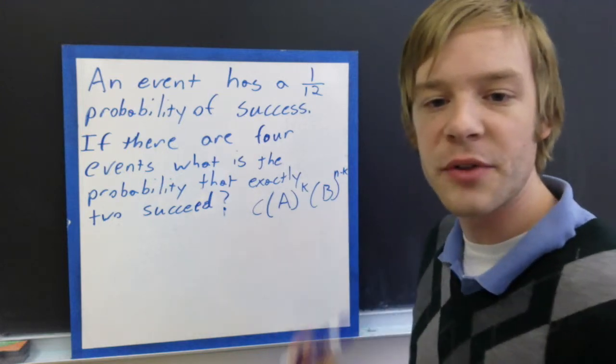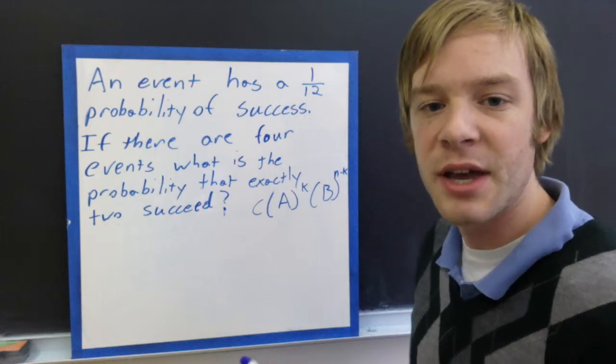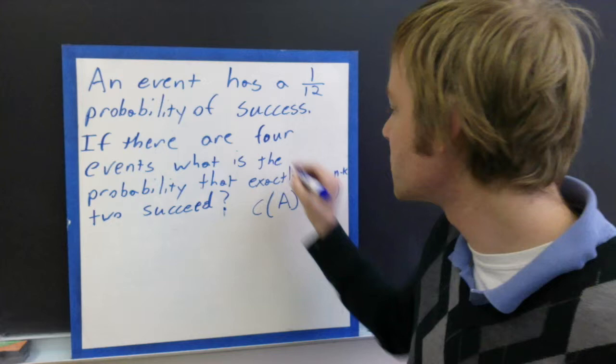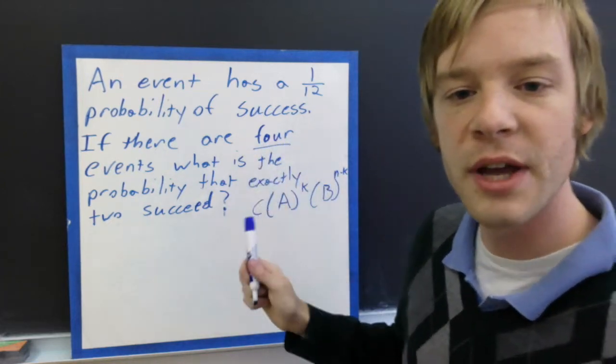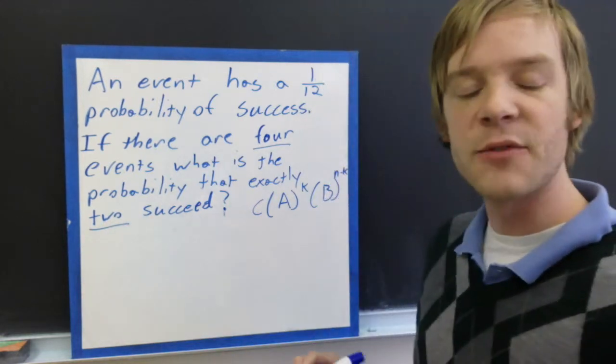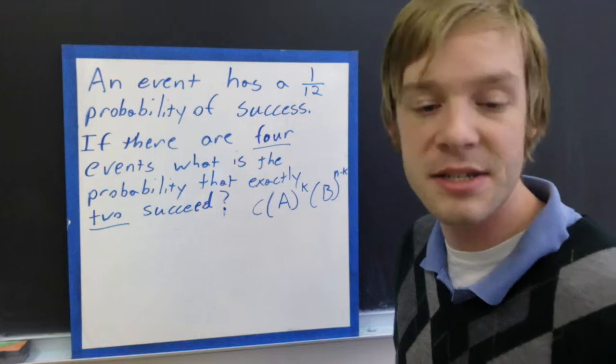So, we just need to fill these in. First off, c was our number of combinations. And if we have 4 choose 2, because we have 4 total and we are choosing 2. If you remember that from our Sierpinski's triangle, or you calculated it out, you should get c equals 6.